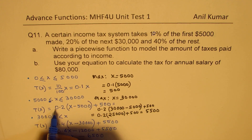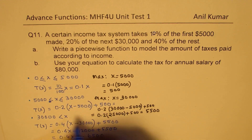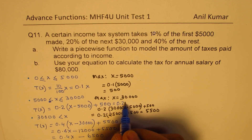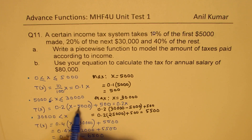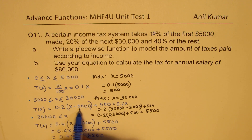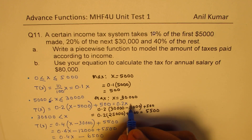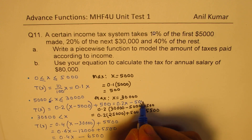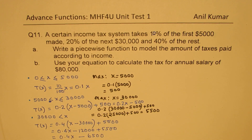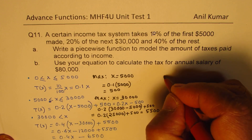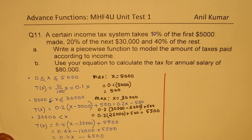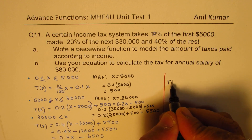Similarly, I can simplify the second bracket. We have 0.2x, and when I multiply 0.2 by 5,000 it becomes 1,000. Taking away 1,000 from 500 leaves minus 500. So the simplified form for the second bracket is 0.2x minus 500.